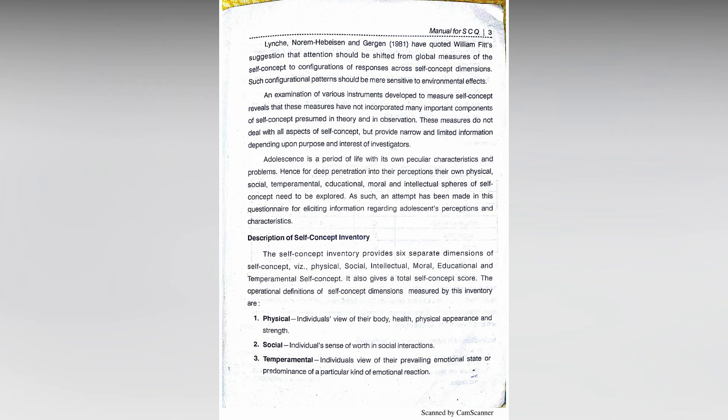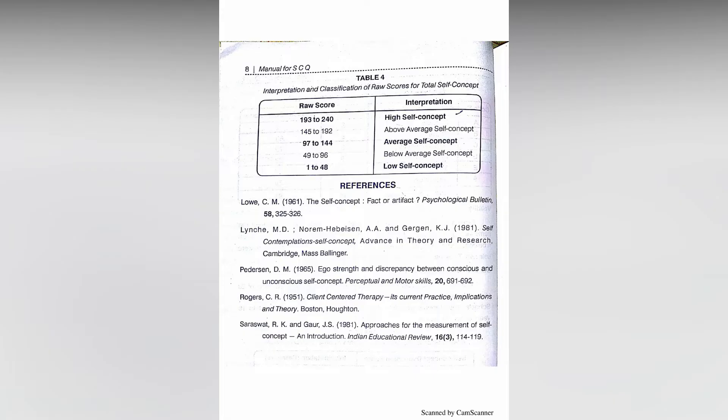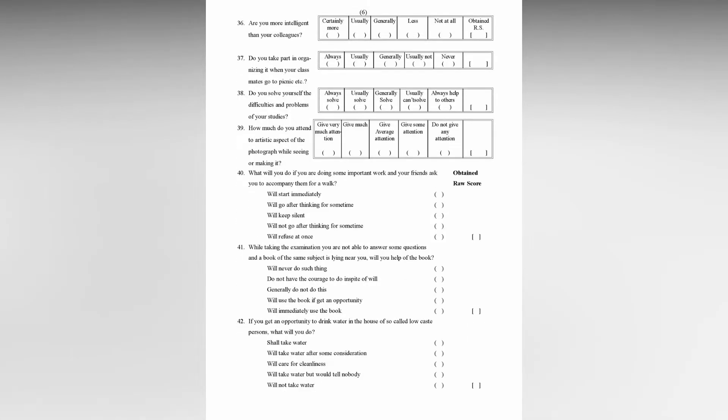You can see it on the screen — the manual of SCQ looks like this. Now I am going to show you how an SCQ questionnaire looks like. On page number one of your SCQ questionnaire, you can see a scoring table. And on the following pages, you will see some questions.